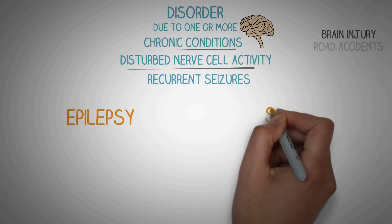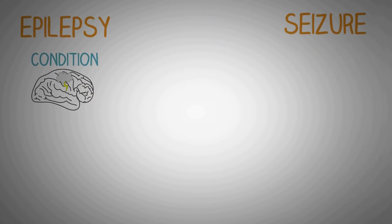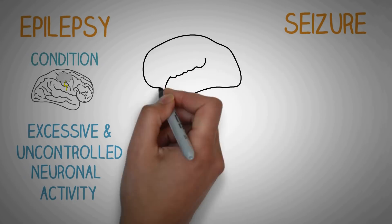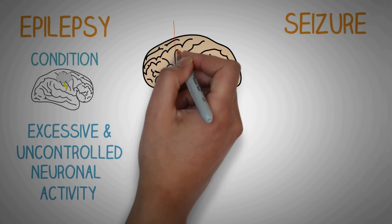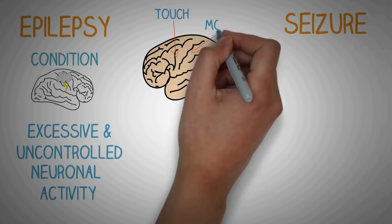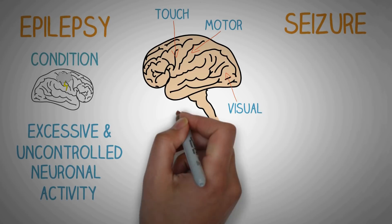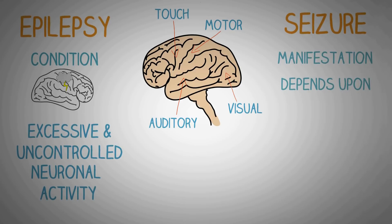It is important to differentiate between the words epilepsy and seizure. Epilepsy is a condition which occurs due to excessive and uncontrolled neuronal activity in the brain. This uncontrolled neuronal activity can be generalized or it can be localized to one area of the brain — for example, the area that perceives touch sensations, the area controlling motor function, or areas for visual and auditory perception. The result of the excessive neuronal discharge in one of these areas is called a seizure, and the type of seizure will depend upon the area of the brain that is affected.